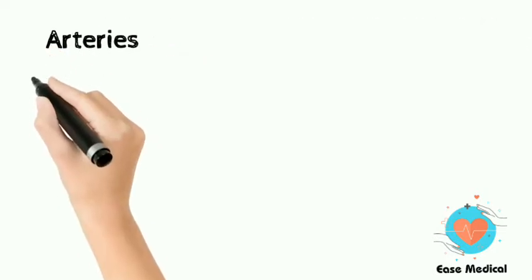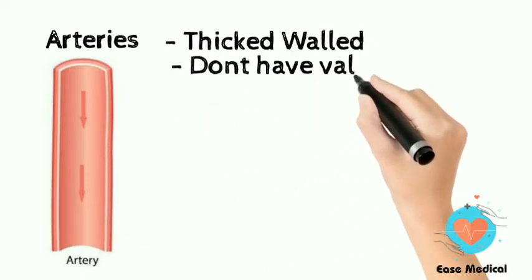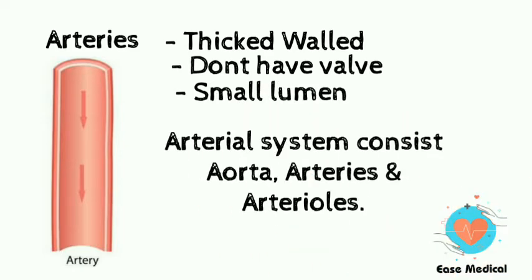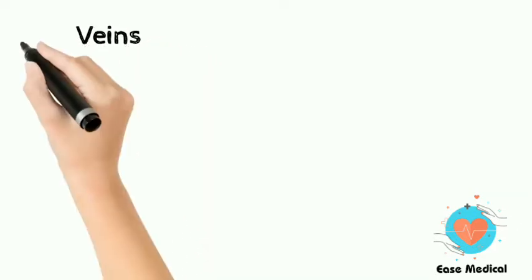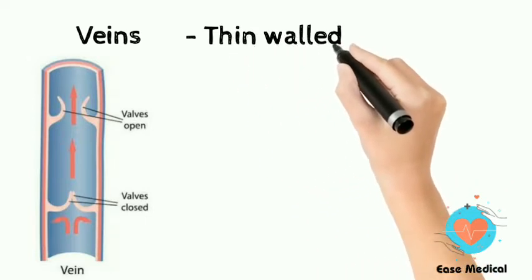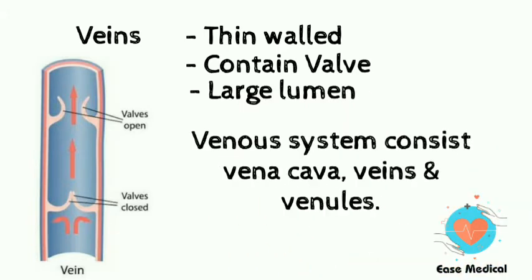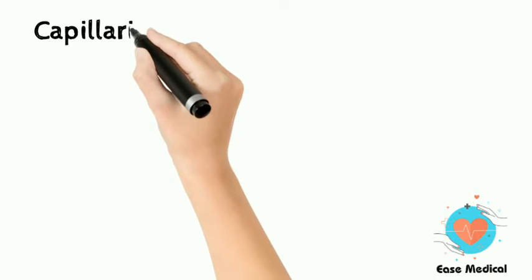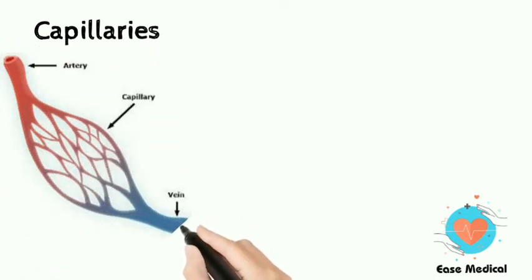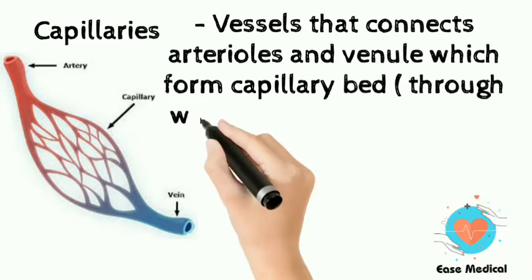Arteries have thick walls, don't have valves, and have a small lumen. The arterial system consists of the aorta, arteries, and arterioles. Veins have thin walls, contain valves, and have a large lumen. The venous system consists of the vena cava, veins, and venules. Capillaries are vessels that connect arterioles and venules, forming a capillary bed through which exchange of material takes place.